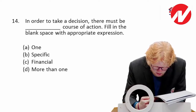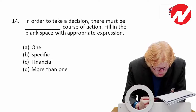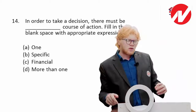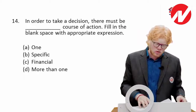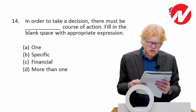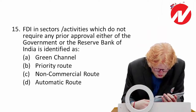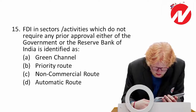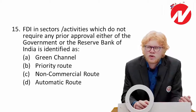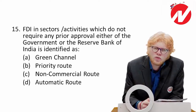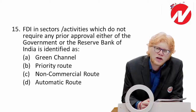Next: in order to take a decision there must be more than one course of actions — the confusion regarding a decision arises only when there are multiple options. Next: FDI in sectors or activities that do not require any prior approval from either the government or the Reserve Bank of India is identified as the automatic route. There are only two routes through which FDI can be brought into India: automatic and approval.